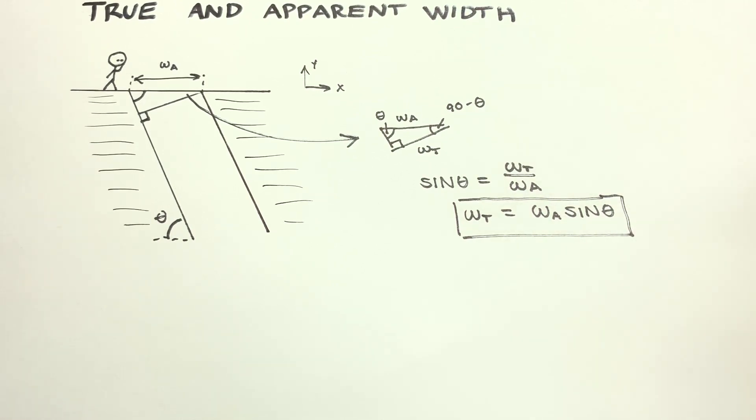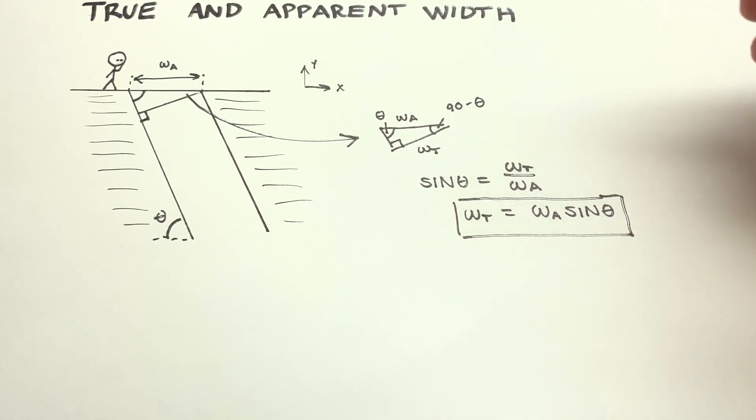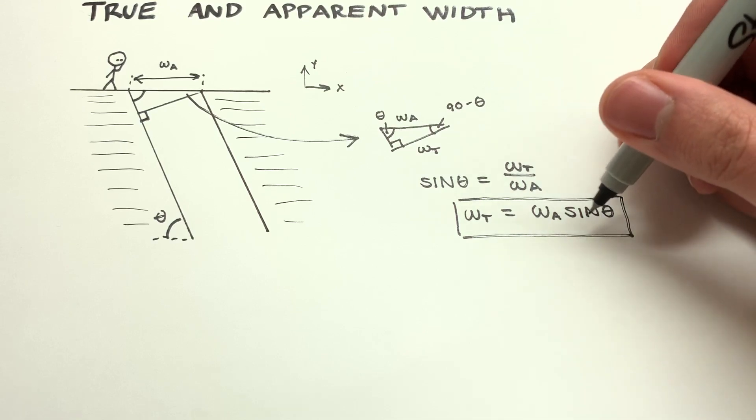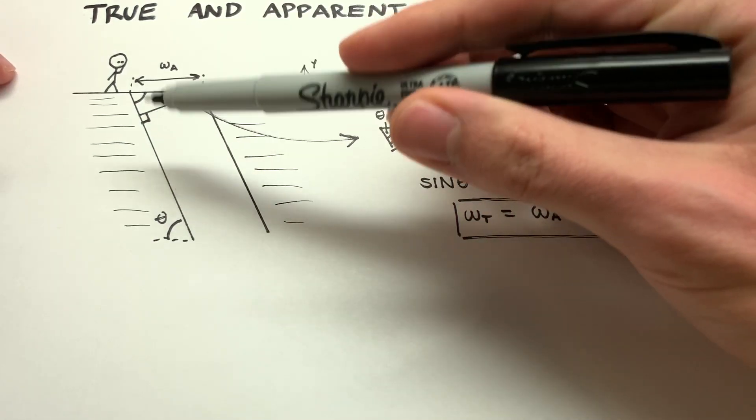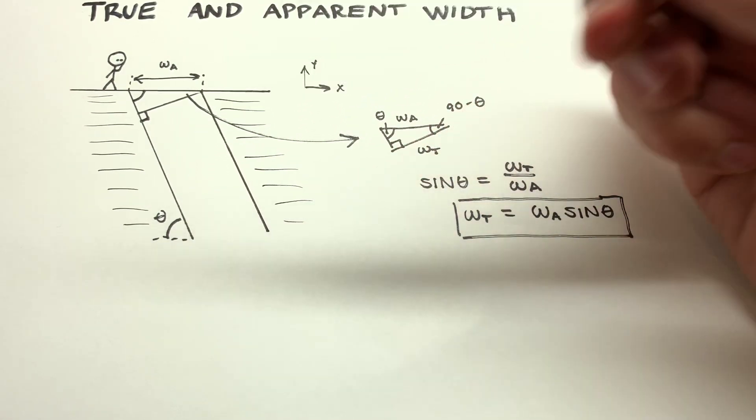You know, plug in whatever values you want for that thing. So you'll notice that the true width will always be less than the apparent width because we're multiplying it by the sine. Or even if we use this angle here, 90 minus theta, that would be a cosine. And since sine and cosine are always between negative one and one, that means that the true width will always be smaller than the apparent width. And the degree to which it's smaller, of course, depends on what theta is. In this case, it's decently vertical. Like I said, that's maybe a 60, 70 degree angle somewhere in there. So it would be pretty close.